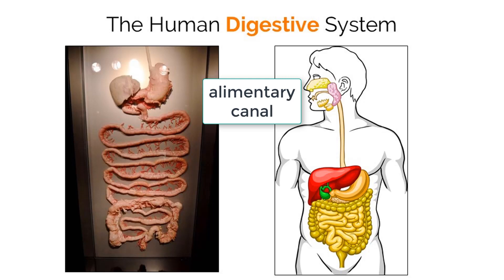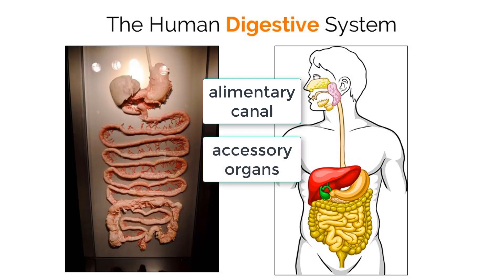The second part consists of accessory organs that food does not actually touch or pass through. Even though food does not pass through them, they help tremendously with many tasks that make the digestive system function properly.